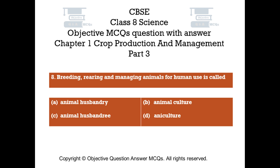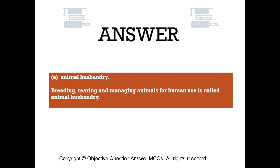Question number 8. Breeding, rearing, and managing animals for human use is called. Option A: Animal husbandry. Option B: Animal culture. Option C: Animal husbandry. Option D: Aniculture. The right answer is option A — Animal husbandry. Breeding, rearing, and managing animals for human use is called animal husbandry.